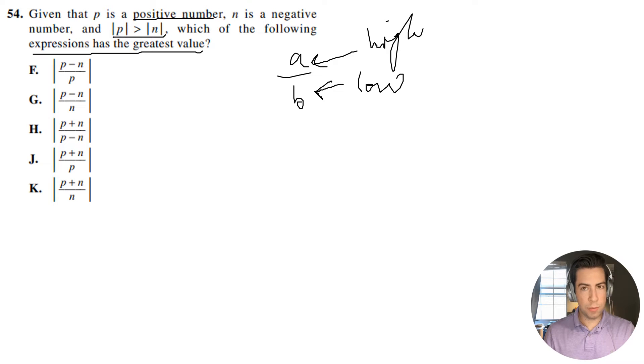So the one that we can just automatically cross off is going to be one that has the high number, which is P, on the bottom. We don't want that. Let's get rid of that one. Let's see here, let's get rid of this one and let's get rid of this one right here.